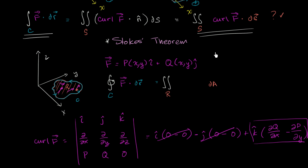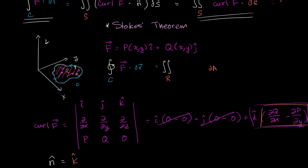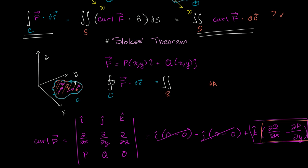Now, what is n — the unit normal vector? Well, we're in the xy-plane, so the unit normal vector is just going to be straight up in the z-direction with a magnitude of 1. So in this case, our unit normal vector is just going to be the k unit vector. So if we take the curl of F dot k — dotting the curl with k — we're just going to end up with the k-component. So curl of F dot the unit normal vector is just going to equal the partial of q with respect to x minus the partial of p with respect to y.